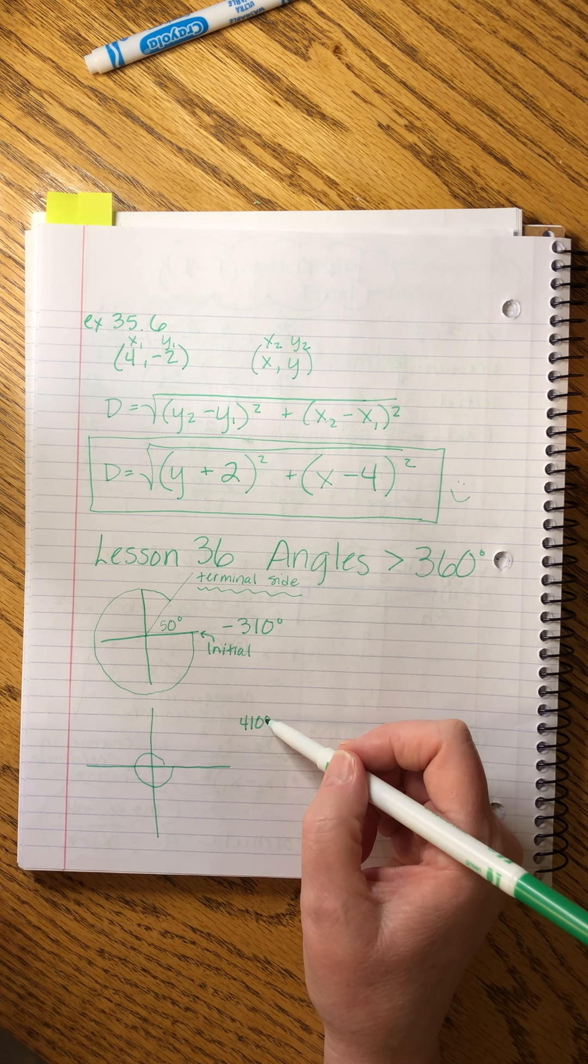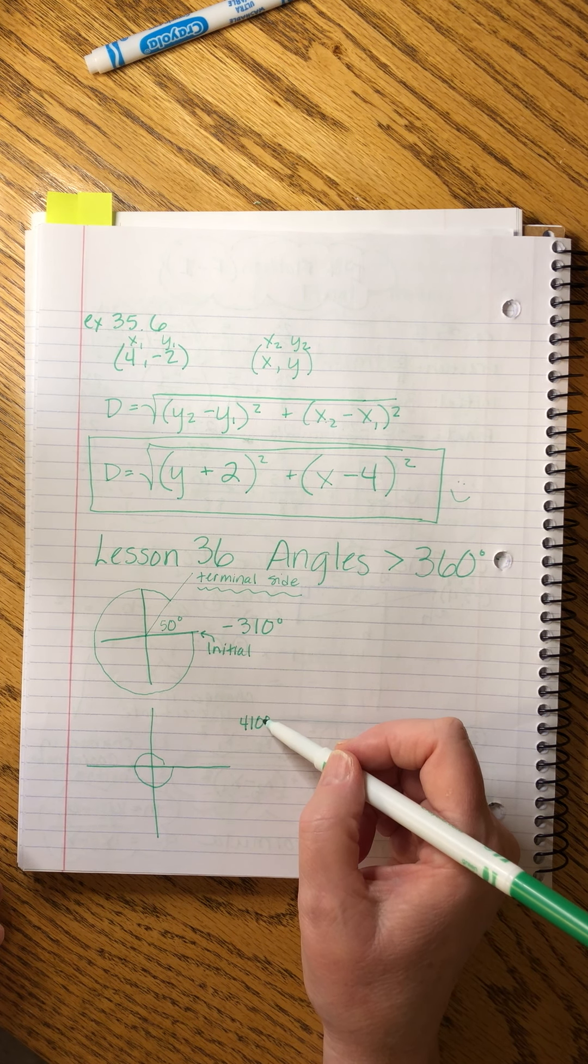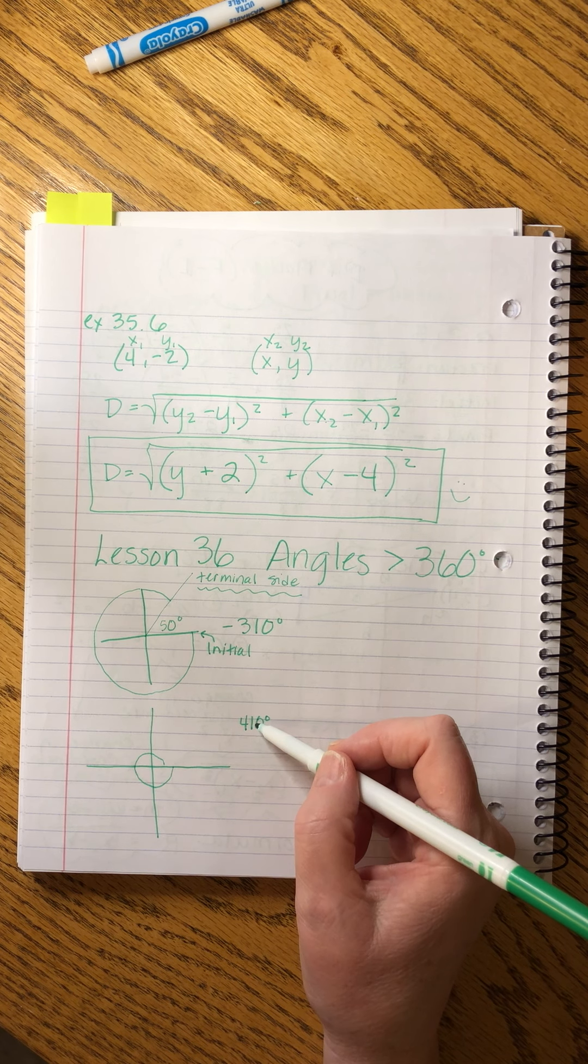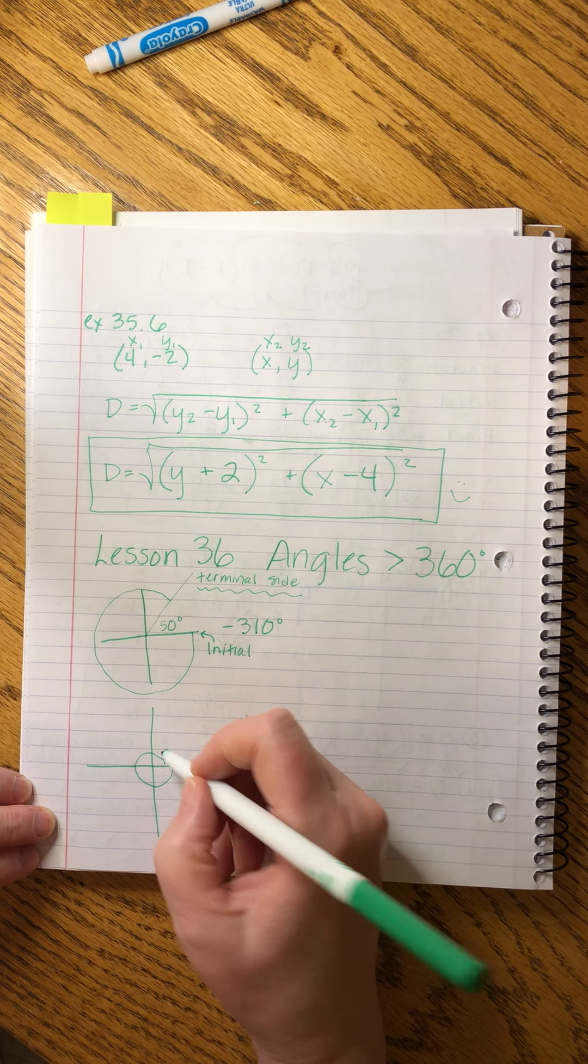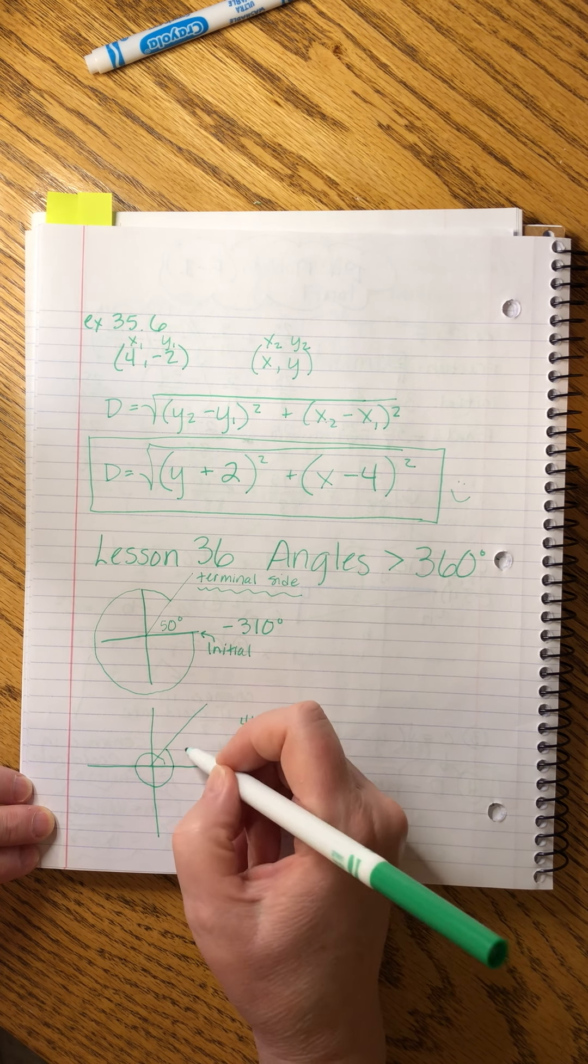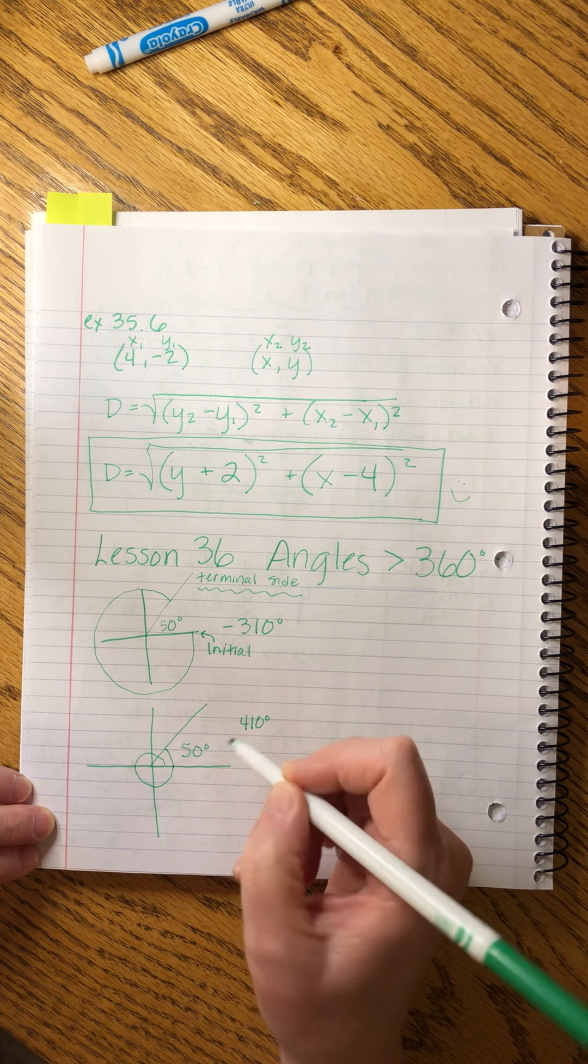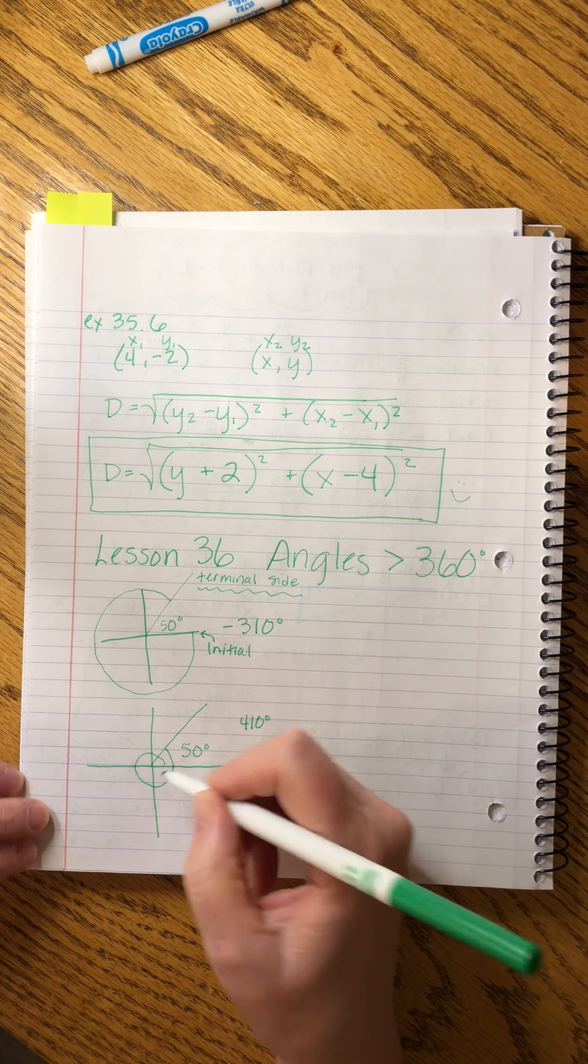We still have what? From 360 to this, we still have another 50 to go. And what that does is it takes us up here to a 50 degree angle. Because there's 360 plus 50 more, that gives us the 410.